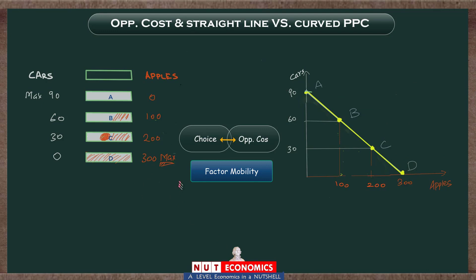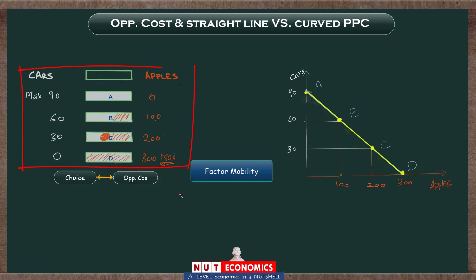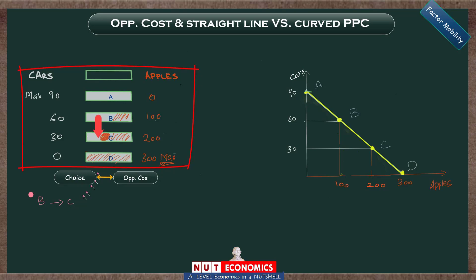Let me start with the most simple thing — how you can calculate the opportunity cost from these tables and numbers. The examiner will simply ask you: what is the opportunity cost of moving from point B to point C, or making the choice of producing at C instead of B? If you see over here, all of these are different maximum combinations of apples and cars. As you move from option B to C, you make 100 more apples but you end up with 30 fewer cars. So the opportunity cost of moving from B to C and gaining 100 apples is the 30 cars that you give up. Simple math tells you that if 100 apples cost you 30 cars, then one apple costs 30 over 100, or 0.33 cars.